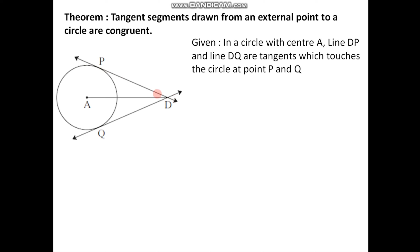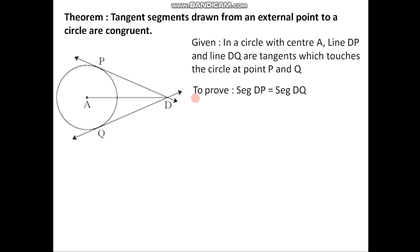As we can see, DP and DQ are the two tangents. The limited portion of a tangent is called a tangent segment. As we can see in the diagram, segment DP is the limited part of line DP, so segment DP is called a tangent segment. In the same way, segment DQ is also a tangent segment. We have to prove that these two tangent segments are congruent, that is, segment DP is congruent to segment DQ.